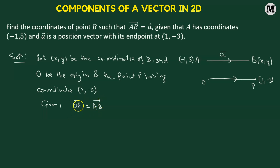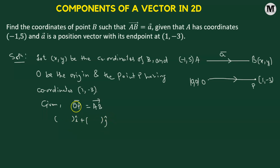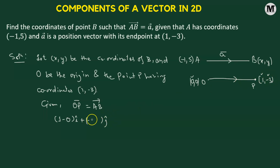Now, what is OP vector? The coordinates of the origin are 0 comma 0. We take the difference of the x-coordinates multiplied by i-cap, then add the difference of the y-coordinates multiplied by j-cap. The x-coordinate of P is 1, so we get 1 minus 0 times i-cap. The y-coordinate of P is negative 3, so we get negative 3 minus 0 times j-cap. This equals AB vector.